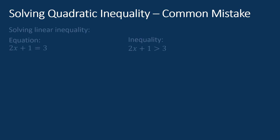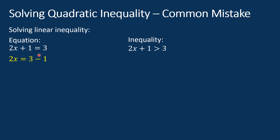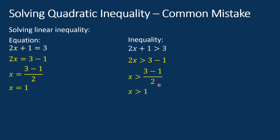Let's see this example. We have a linear equation and a linear inequality. To solve the linear equation, we shift the 1 to the right and then divide it by 2. The answer is x equal to 1. To solve the linear inequality, we repeat the identical processes — we move the 1 to the right and divide it by 2 — and we obtain x greater than 1. Both answers are correct. We can see that solving linear inequality is similar to solving linear equation. However, this is not the case for solving quadratic inequality.